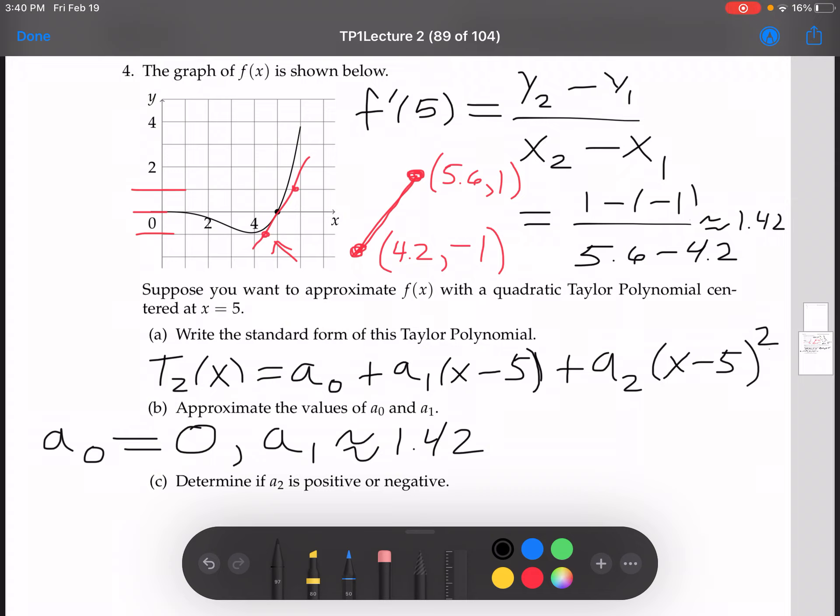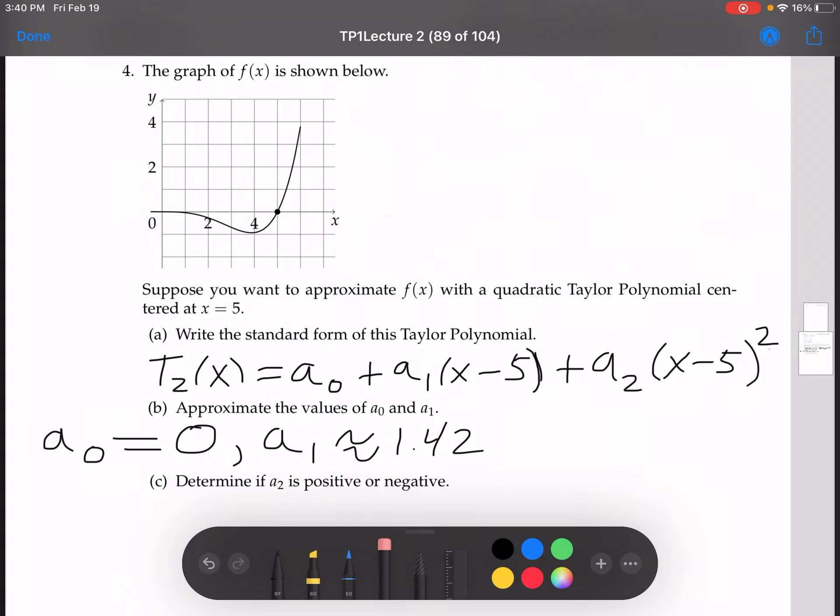So that's how you'd find a0 and a1 with a problem like this. Now let's think about finding what is a2. So remember, using our formula again, a2 is f double prime of 5 over 2 factorial. Now we're just trying to determine if it's positive or negative. 2 factorial is 2 times 1, so that's 2. So a2 is f double prime of 5 over 2.